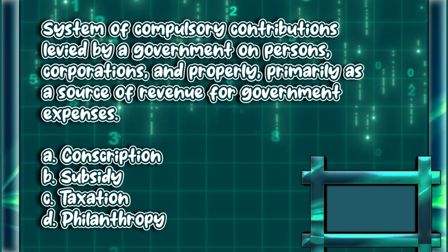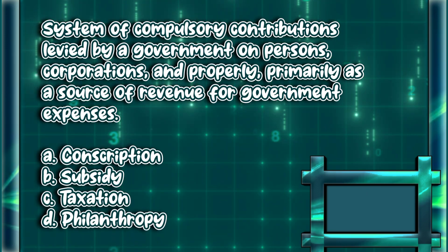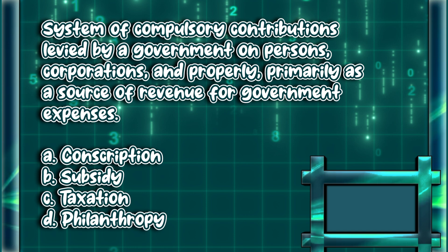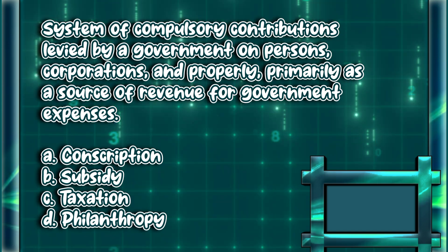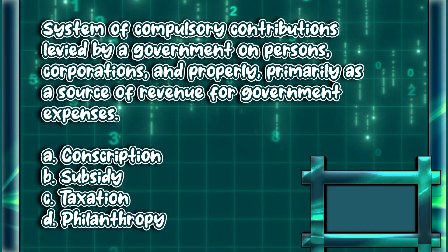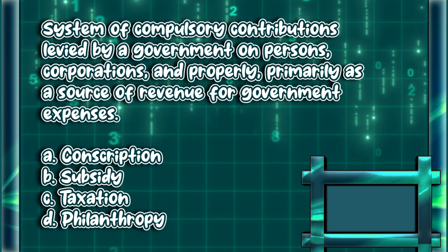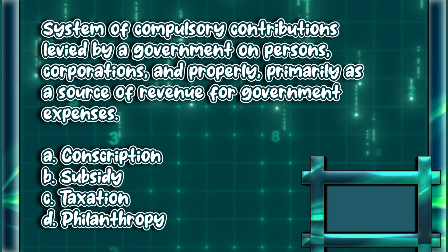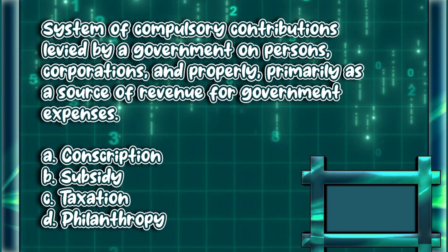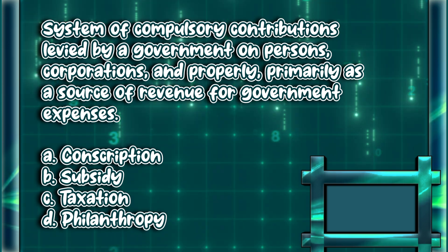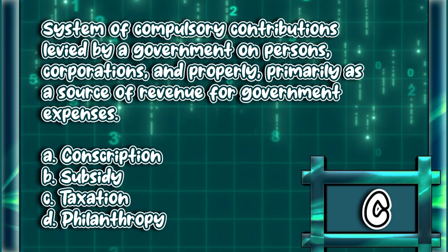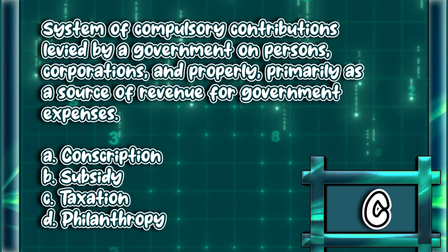System of compulsory contributions levied by a government on persons, corporations, and property, primarily as a source of revenue for government expenses. A. Conscription. B. Subsidy. C. Taxation. D. Philanthropy. The answer is letter C.